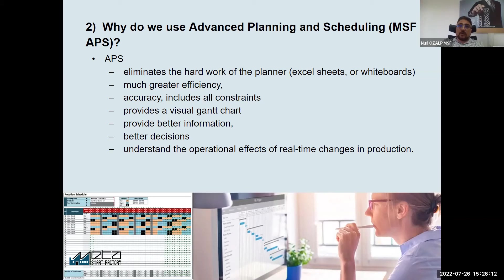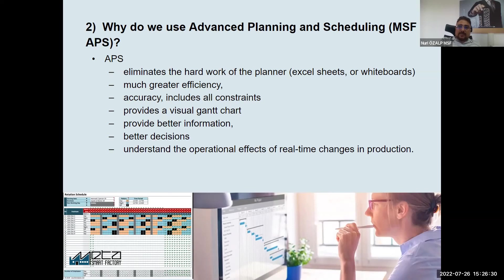It includes all constraints and provides a visual Gantt diagram that every person within the business can view for their own needs. APS also provides better information on which planners and managers can make better decisions and understand the operational effects of real-time changes in production.